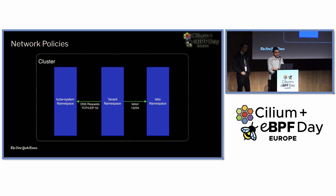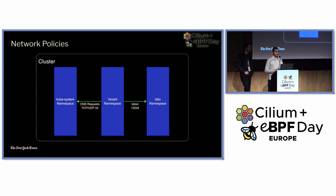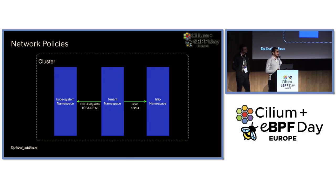Another benefit of using Cilium and network policies is that we can apply cluster-wide policies across workloads. So for a tenant namespace, by default they get access to Istio namespaces, for example, which allows all of the sidecars to communicate with Istio and with Ingress Gateway and other things. On the other side, we need to do all of the DNS lookups and other things that happen in the kube-system. These are the default policies that get applied to the cluster.